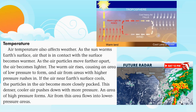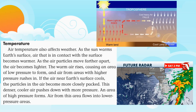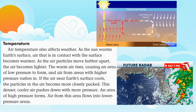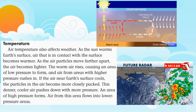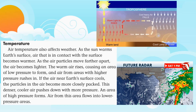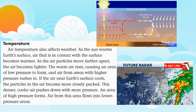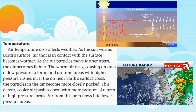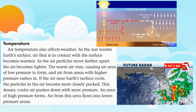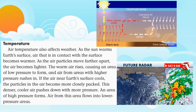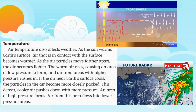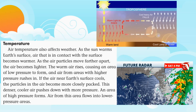Air from areas with high pressure rushes in. If the air near Earth's surface cools, the particles in the air become more closely packed. This denser, cooler air pushes down with more pressure, forming an area of high pressure. Air from this area flows into lower pressure areas.